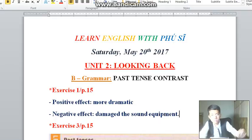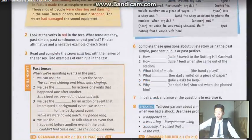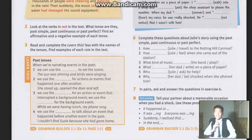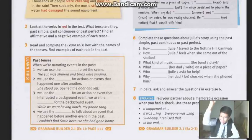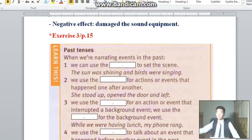Alright, so we have done exercise number 1. Now we'll move to exercise number 3 on page number 15. It tells us to read and complete the 'Learn This' box about past tenses, with the names of the tenses, and find examples of each group in the text. So let's read and fill in the blanks so that we can identify the structure of past tenses.